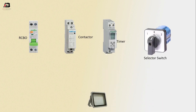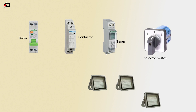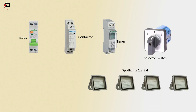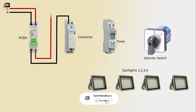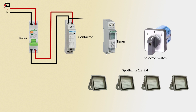One, two, three, and four phase connection to RCBO circuit breaker. Neutral connection to RCBO circuit breaker. Output neutral connection from RCBO to connect contactor. Output phase connection from RCBO to connect contactor. Neutral connection to timer.